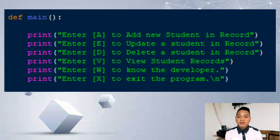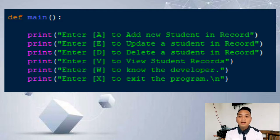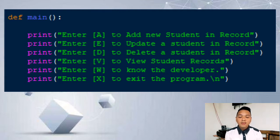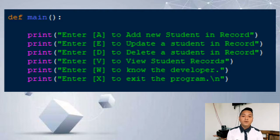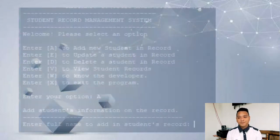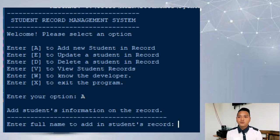We have here the function defined with main as the function name. The options are: A to add a new student in the record, E to update or edit a student in the record, D to delete a student in the record, V to view the student record, W to know the developer, and X for exiting the system. If the user chooses the A option, here is what will come out.